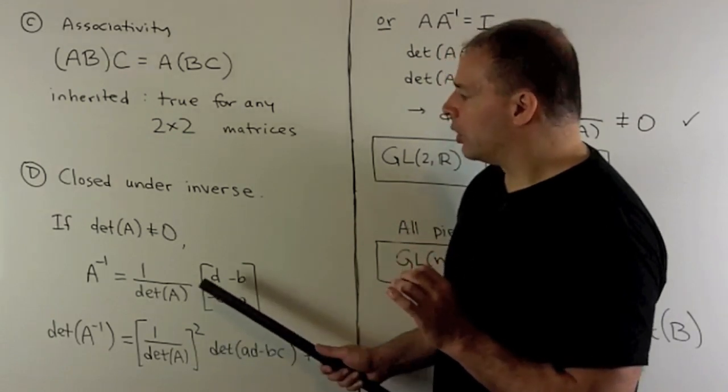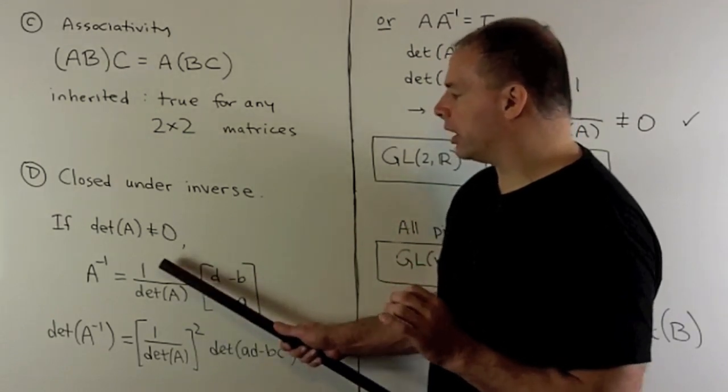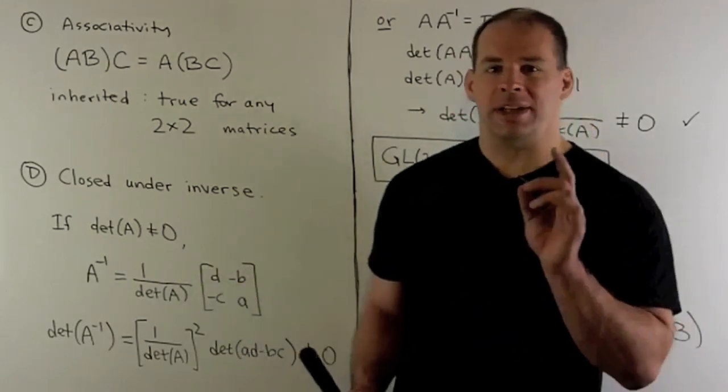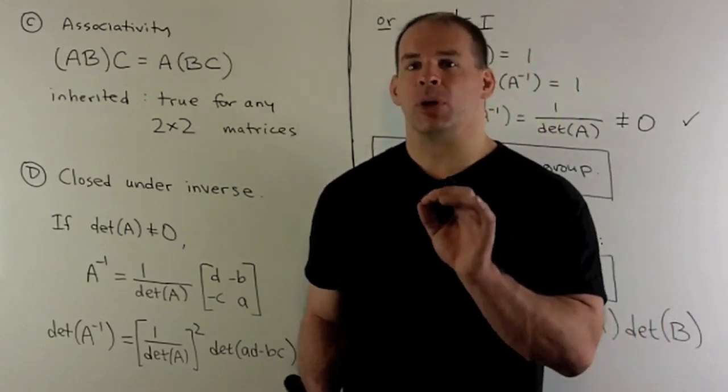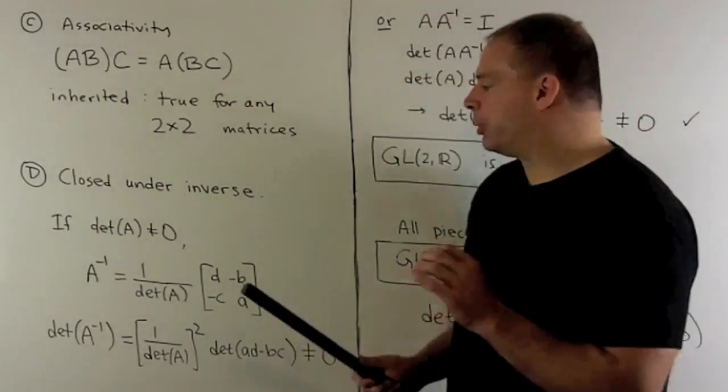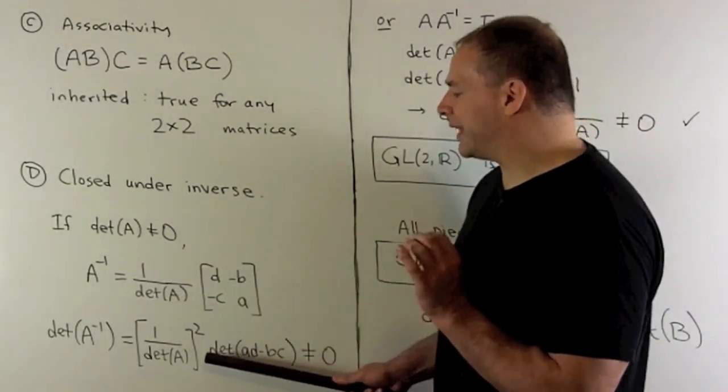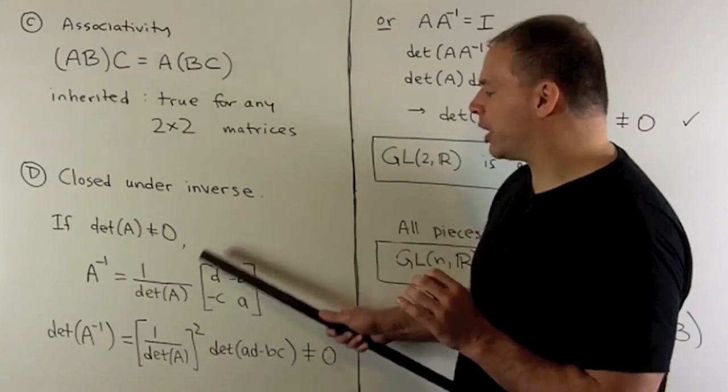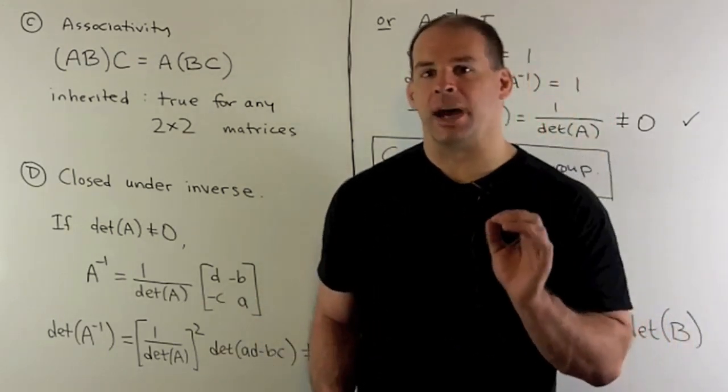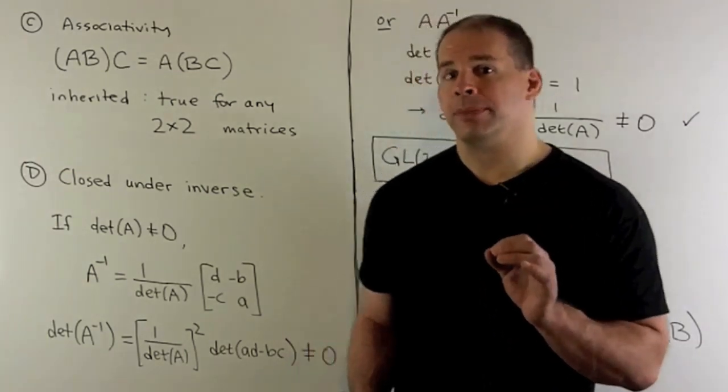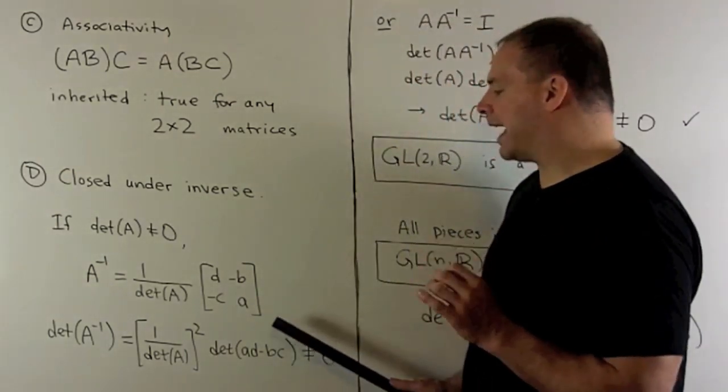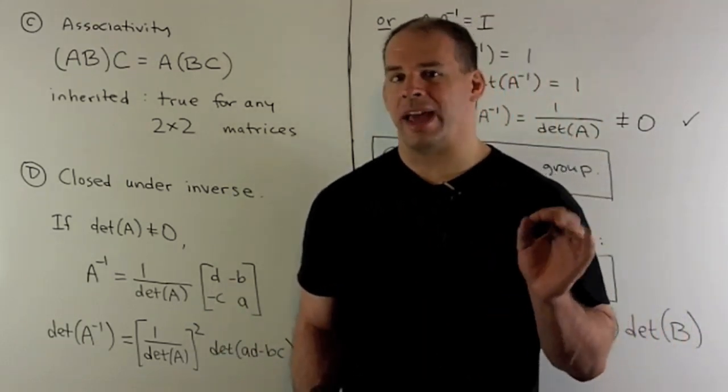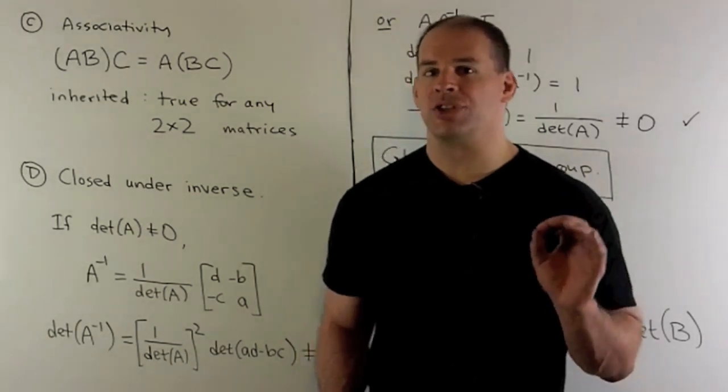Now that doesn't show that A inverse is in G. To do that we have to take the determinant. So what happens here? Well, if I have the scalar out in front and I multiply the matrix by it, we're going to multiply each row by that scalar. When I take the determinant, I'm allowed to pull scalars out of each row, so we can pull that scalar out of each row. So it's going to show up on the outside twice to give me a square. Then if we take the determinant of what's here, I get determinant of A: d minus bc—that's the determinant of A. I can cancel the determinant of A in the numerator and denominator, leaving me with one over determinant of A. Since determinant of A is non-zero, flipping it over is still going to be non-zero, so A inverse is in G.